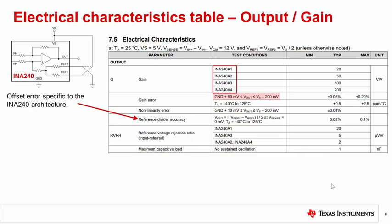Another offset error here is the reference voltage rejection ratio, or RVRR. This specification works the same way as CMRR and PSRR, in that as the reference voltage deviates from the testing condition of VS divided by 2, there will be some change in the offset.